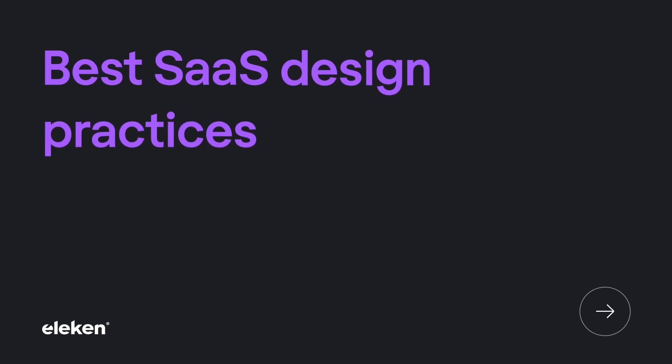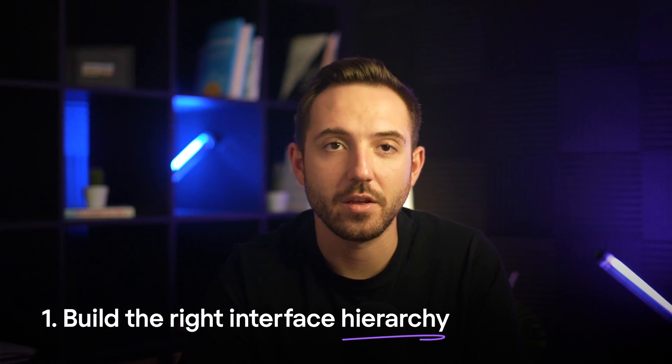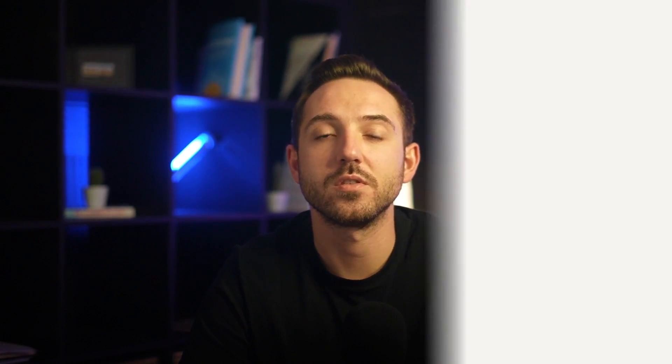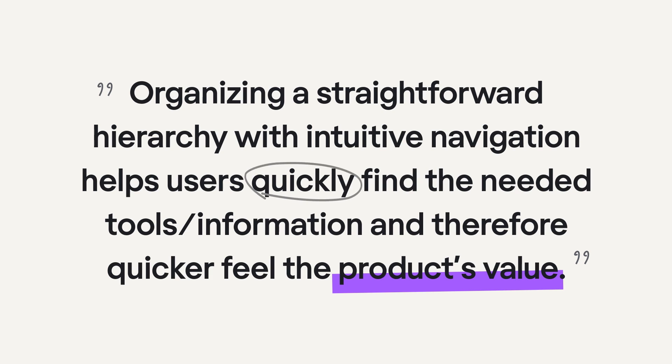To summarize the specifics of SaaS product design, here are some of the best design practices. First, build the right interface hierarchy. You have to think out a crystal-clear value proposition and ways to communicate it to your customers. Organizing a straightforward hierarchy with intuitive navigation helps users quickly find the tools and information they need, and therefore quickly feel the product's value. The first screen users see when they open your cloud app should provide quick access to the most relevant data, and line up all essential features in the menu bar so users don't waste time searching.